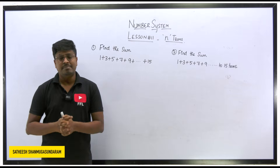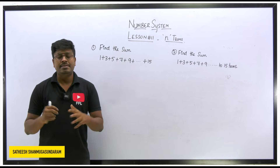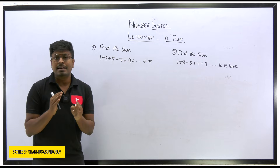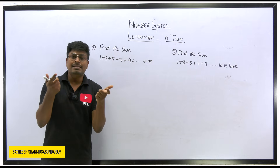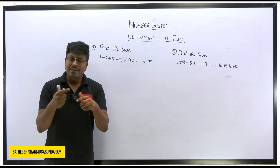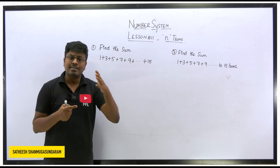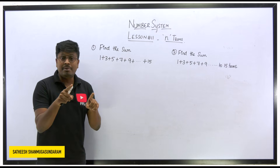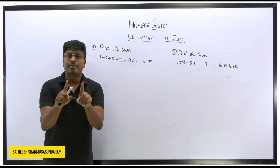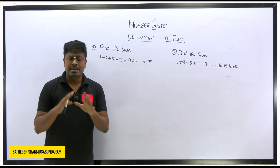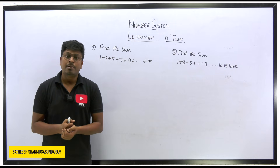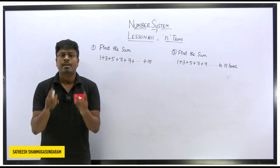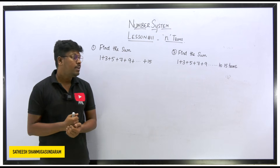Thanks for being here on my YouTube channel. In this video on the topic Number System, we are going to learn one of the most important concepts — N Terms — where many students are still making mistakes. This comes under Arithmetic Progression. We've heard this concept in schooling, around 10th standard mathematics. This is Lesson Number 11, not lesson one. Number System is the basics for complete Quantitative Aptitude, so always start from Lesson 1 before learning topics like time and work, average, or ratio and proportion.